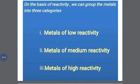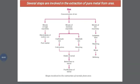Based on reactivity, we group metals into three categories: low, medium, and high reactivity. When we extract these metals from the soil, our main intention is to purify the metal. The ores extracted from the earth are usually contaminated with large amounts of impurities such as soil, sand, and dust particles — we generally call these gangue. The gangue must be removed from the ore prior to the extraction of the metal.